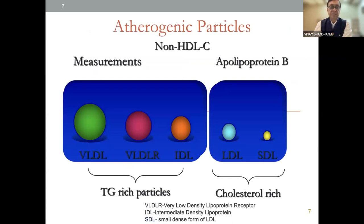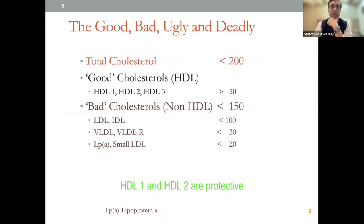The atherogenic particles — the non-HDL component — are basically triglyceride-rich particles like VLDL, VLDL-R, or IDL, that is intermediate density lipoprotein. The cholesterol fraction is basically LDL cholesterol and the small dense LDL cholesterol, which is attached to apolipoprotein B. The good, bad, ugly, and deadly: total cholesterol should be less than 200. Good cholesterol — HDL — should be more than 50, comprising HDL1, HDL2, and HDL3. Bad cholesterol — non-HDL cholesterol — should be less than 150, comprising LDL, IDL, VLDL, VLDL-R, lipoprotein A, and small LDL. HDL1 and HDL2 are protective.